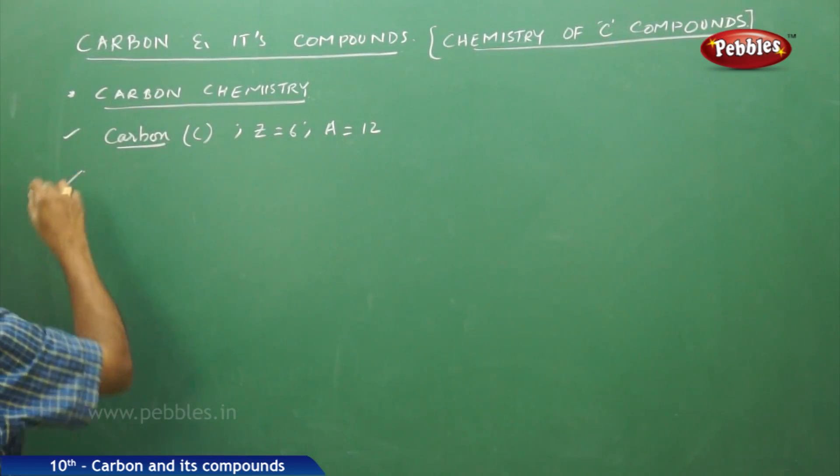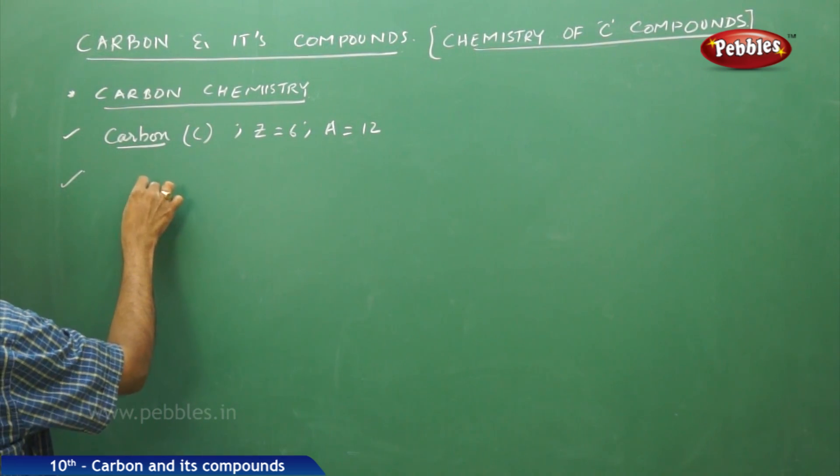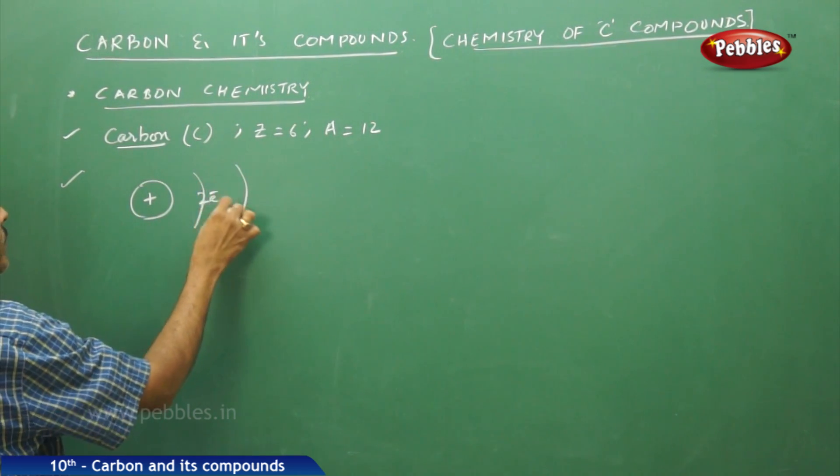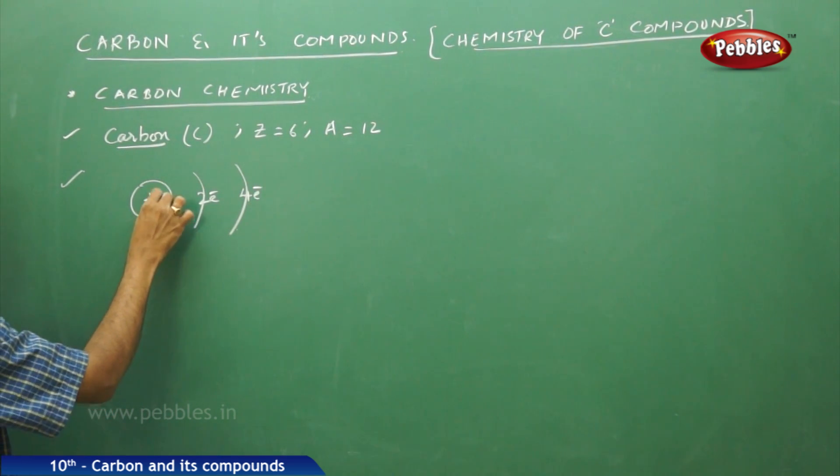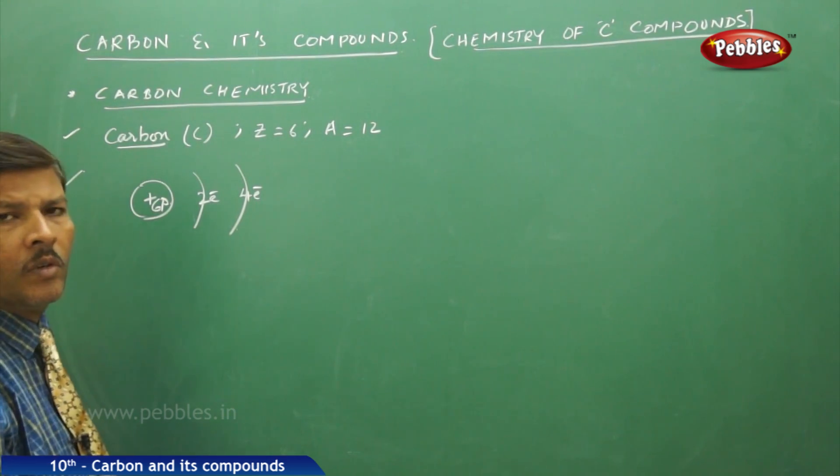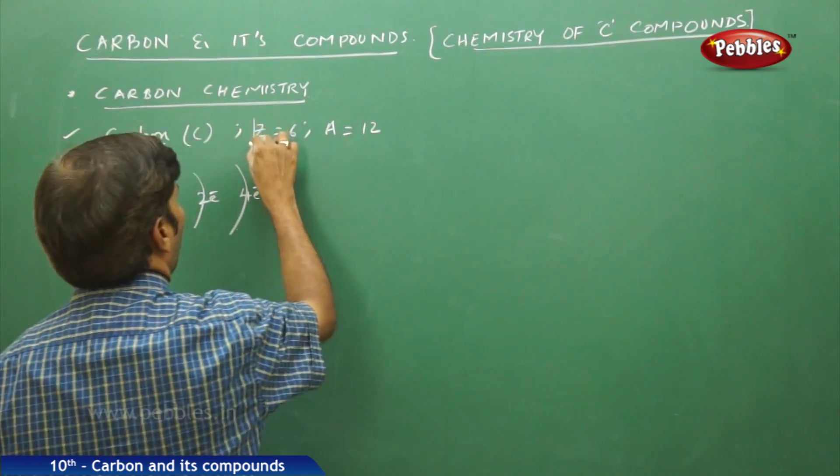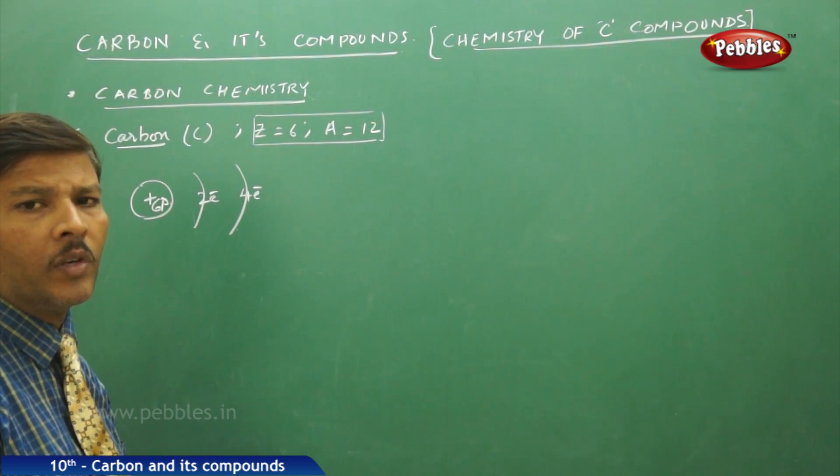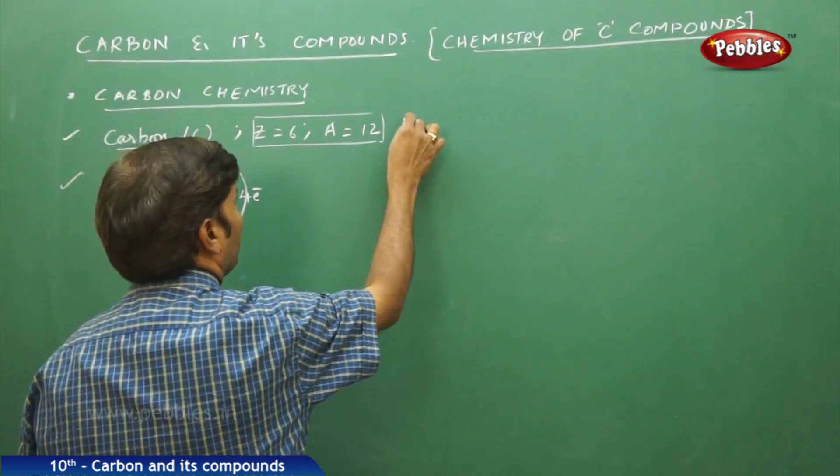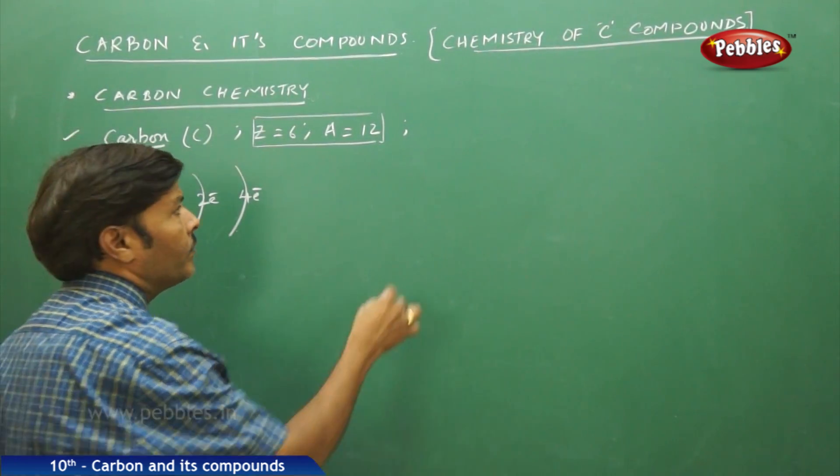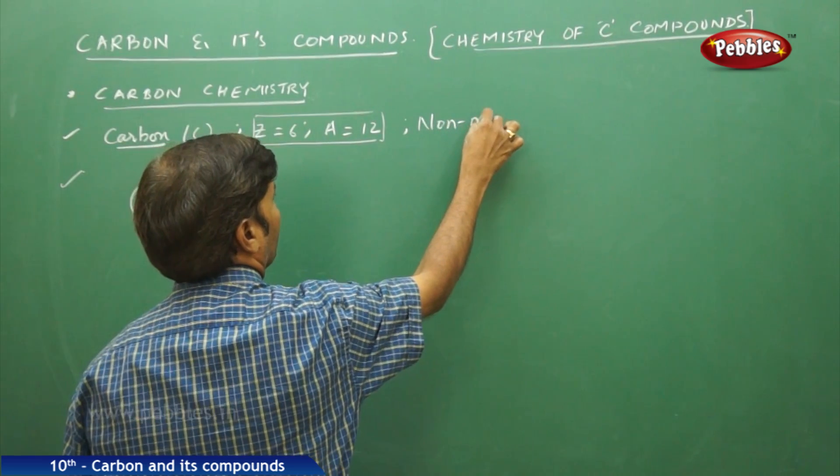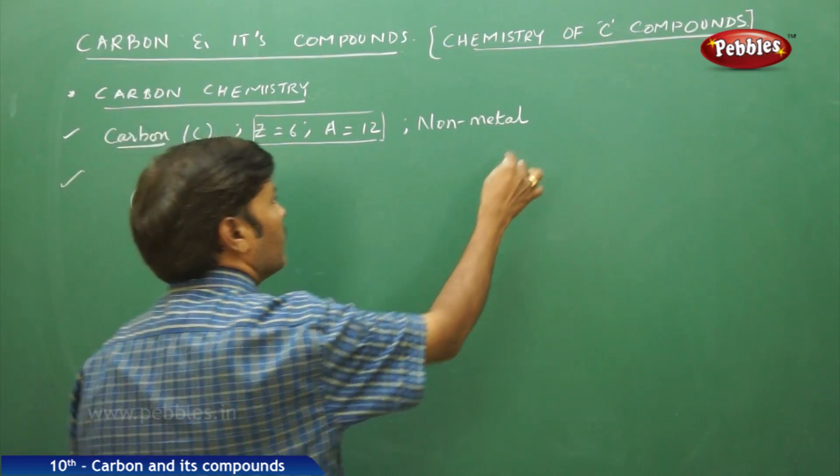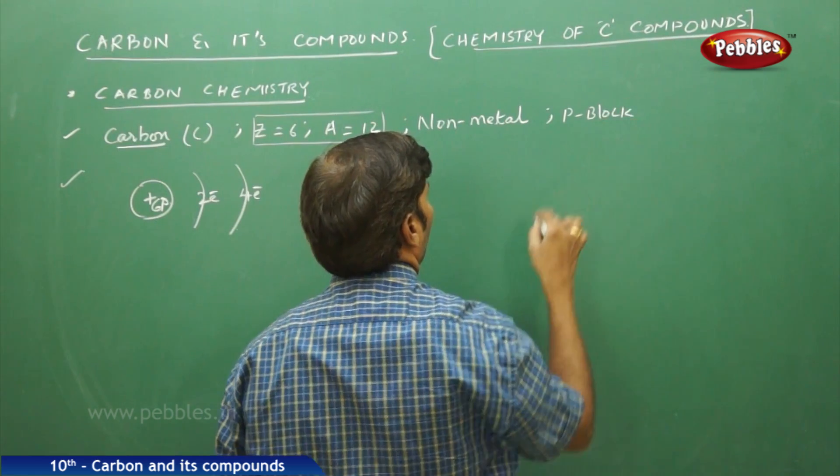And if you go to the structure of the carbon atom nucleus, it contains 2 shells. In 2 shells we have 2 electrons in the first shell and 4 electrons in the valency shell, and it has 6 protons in the nucleus. Moreover, carbon is a non-metal. It belongs to the P block of the periodic table.